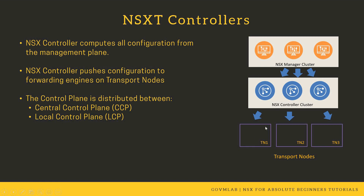In NSX-v we just had ESXi hypervisor as a transport node, but in NSX-T we have ESXi hypervisor, KVM hypervisor, bare metal servers, or any public cloud provider as a transport node. Additionally, the control plane is distributed between two planes: CCP (central control plane), managed by the NSX controller cluster, and LCP (local control plane), which sits on each transport node. The fundamental concepts and functionality of NSX manager, NSX controller, and transport nodes remain the same.